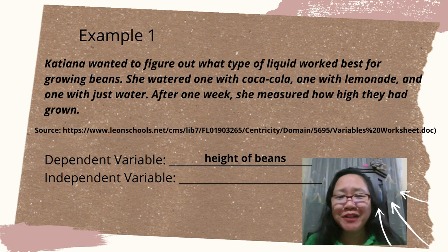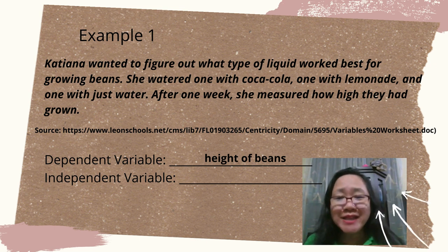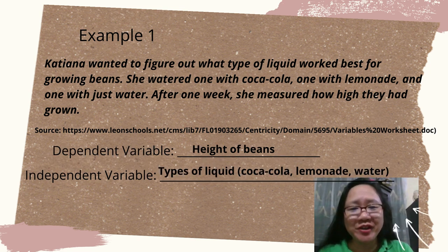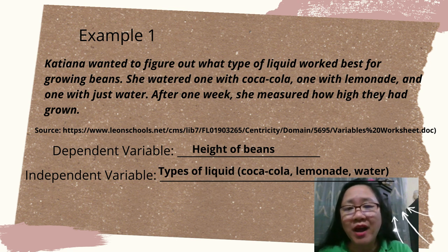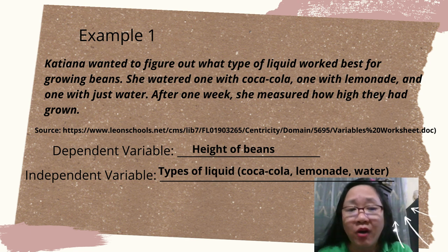Because height is measured in order to identify the effect of liquids watered on it. If the dependent variable is height of beans, what do you think is the independent variable? The independent variable is type of liquid, because the type of liquid is manipulated. Different types of liquid — like Coca-Cola, lemonade, and water — are used in order to see the effect of types of liquid on the height of beans. So the type of liquid is the cause of the growth of the beans.